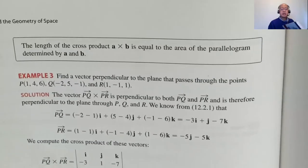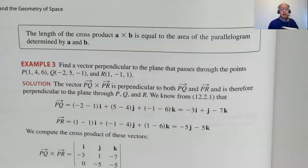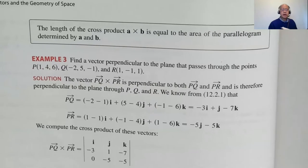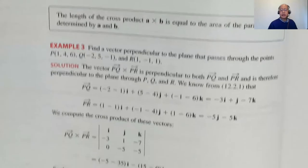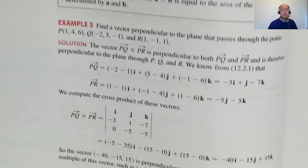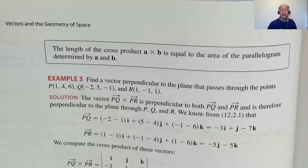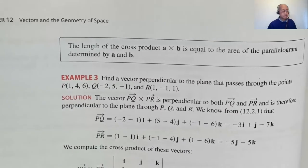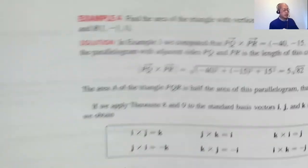On page 818, here's a nice theorem: the length of the cross product A cross B equals the area of the parallelogram determined by A and B. If you have two space vectors, they determine a parallelogram, and the area of that parallelogram is the magnitude of the cross product.